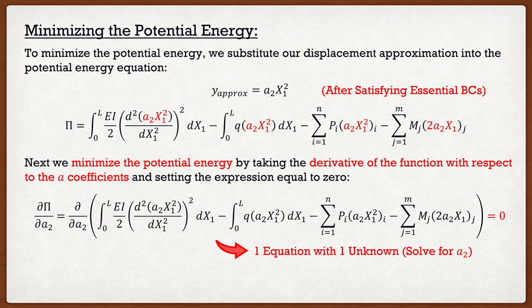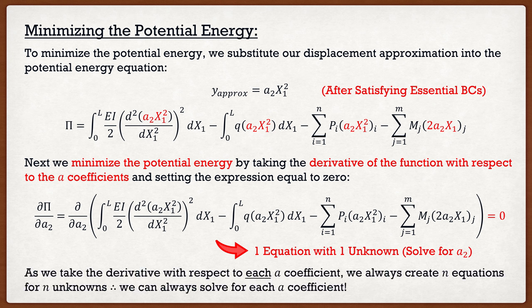If at this stage I have a₂, a₃, a₄, a₅, etc., it's simple — we take the partial derivative with respect to each of the a coefficients. I take the partial derivative with respect to a₂ and set it equal to zero to get my first equation. Then I take the partial derivative with respect to a₃ and set that equal to zero for a second equation. However many unknowns we have — say six unknown a coefficients — we create six equations, and we can always solve for those unknown a coefficients.